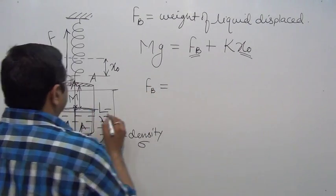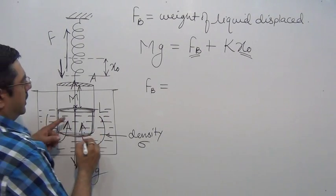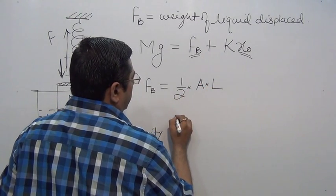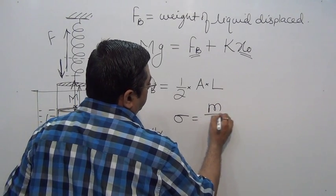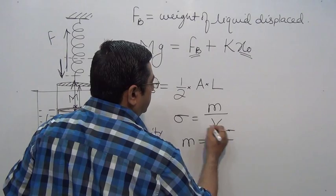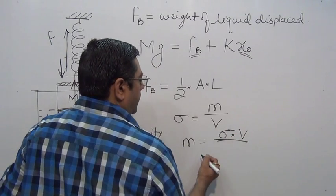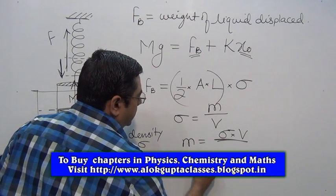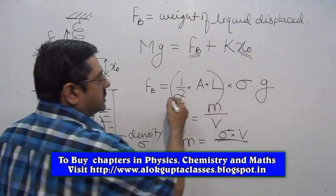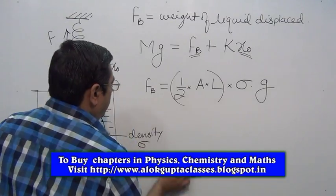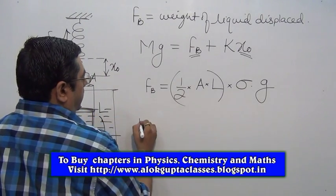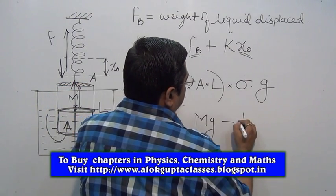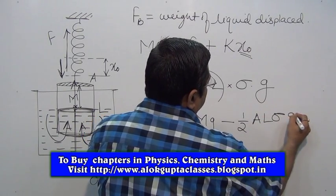Calculate what is the buoyant force. What is the volume of this liquid? Half of volume of the cylinder A into L. We know that density is equal to mass upon volume, so mass of the displaced liquid is sigma into V. This is V multiplied by sigma. What is the weight? Weight is mass multiplied by g. This is buoyant force equated. K times X naught is equal to Mg minus half A L sigma g.